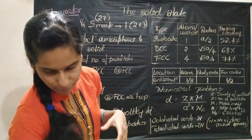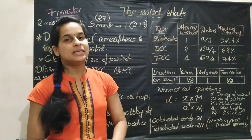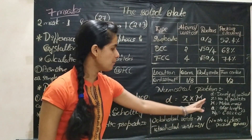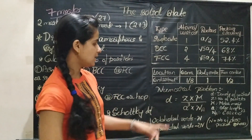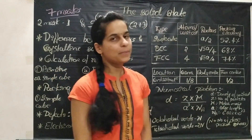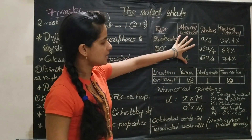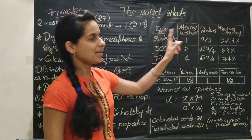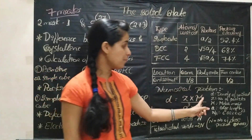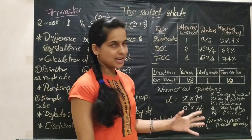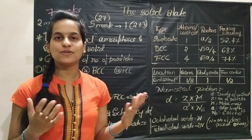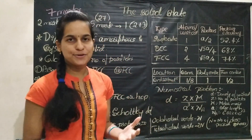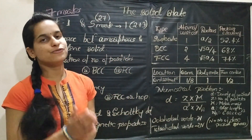Then, the numerical problem. A numerical problem based upon the density formula will definitely be asked. The formula for density of the unit cell is: D = Z × M / (a³ × Nₐ). Here, D is density of the unit cell, Z is number of particles (simple cube = 1, BCC = 2, FCC = 4), M is molar mass, a is edge length, and Nₐ is Avogadro's number = 6.022 × 10²³. This formula is very very important.